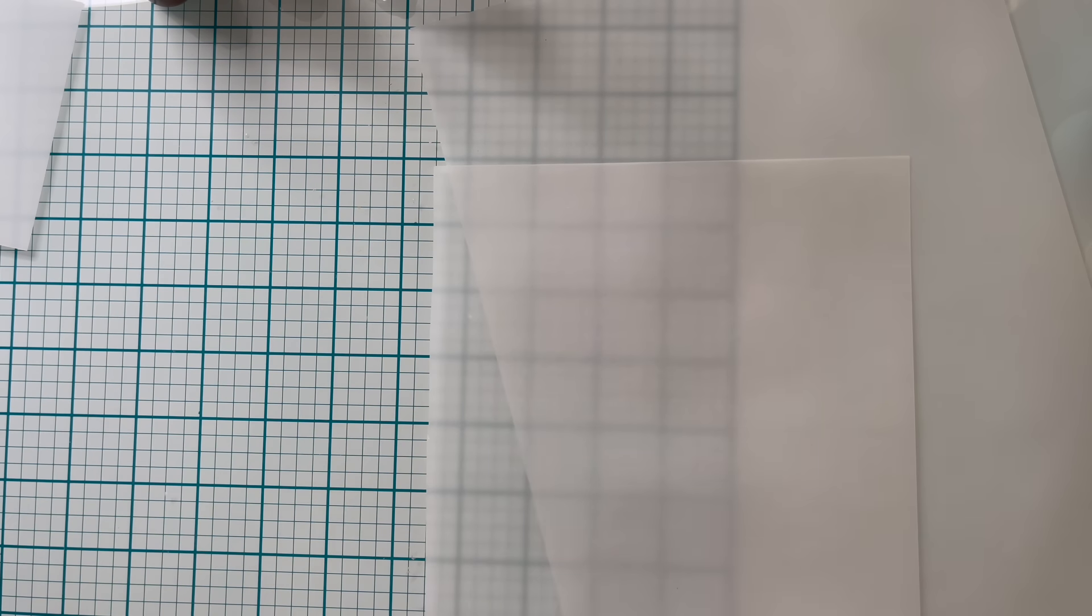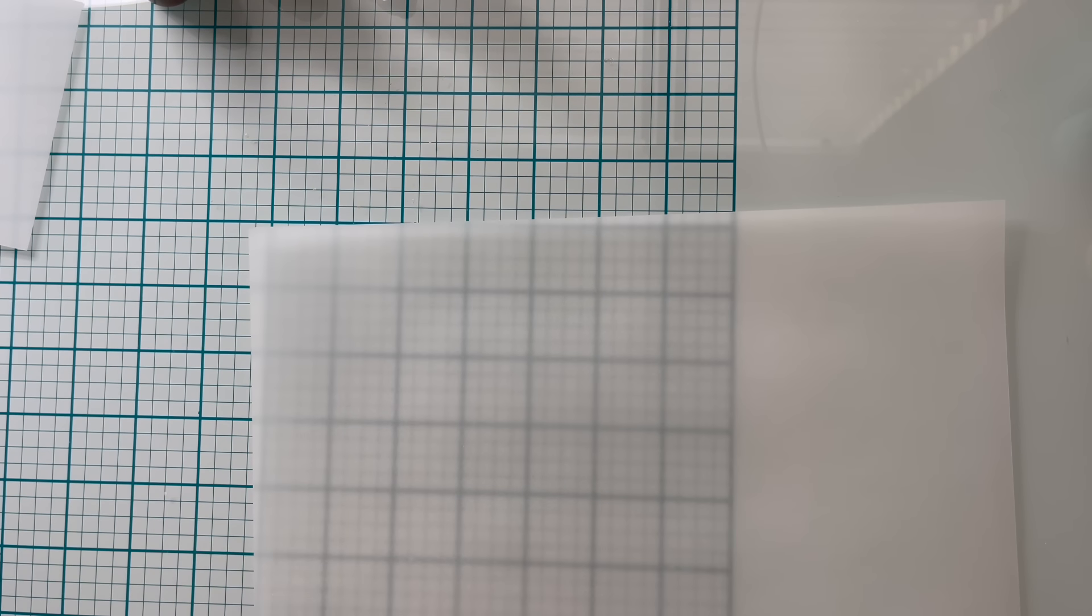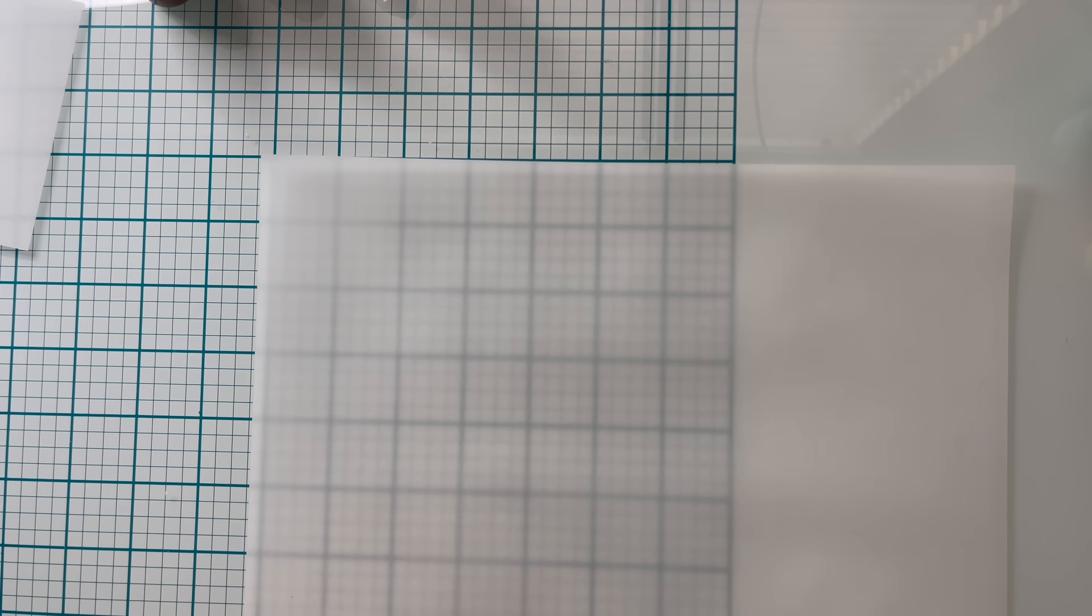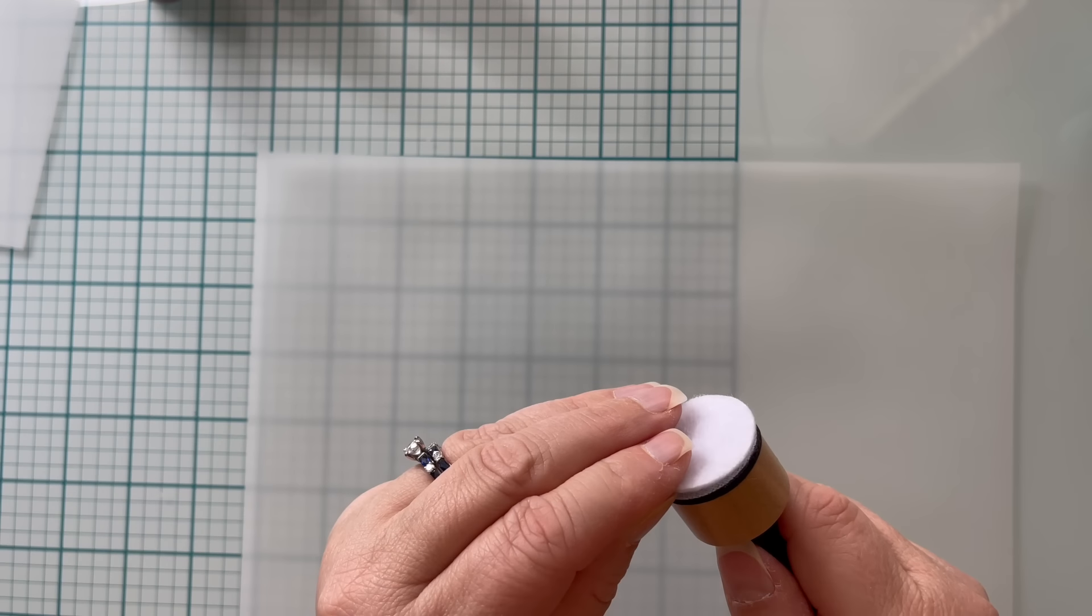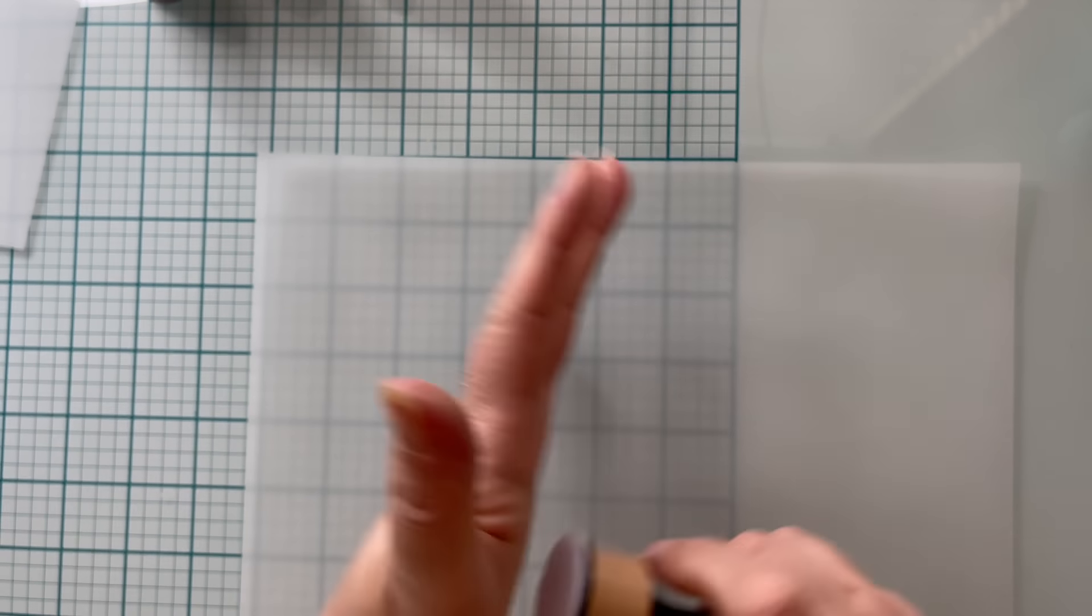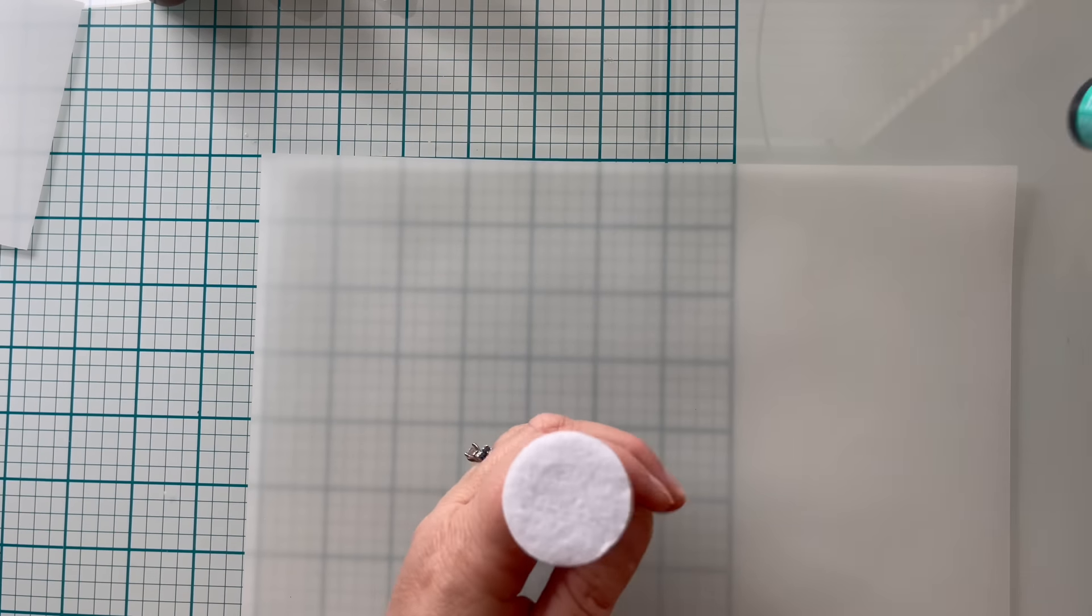So I'm going to be using the Ranger brand alcohol felt pads on a blending tool, and I'm going to start by using a full sheet of vellum. Today was all about playing, and I figured a full sheet might not warp and curl as maybe a smaller sheet would. So, here we go.